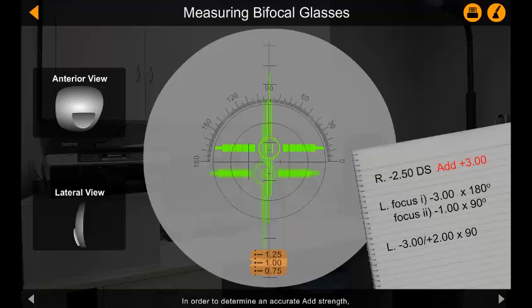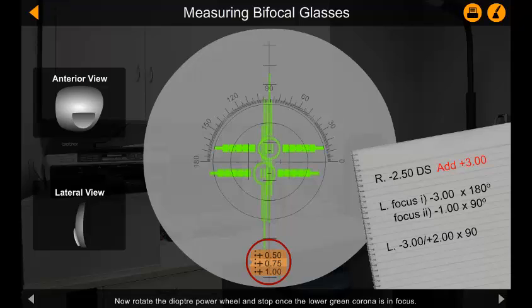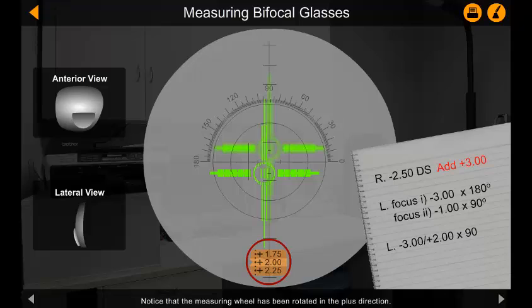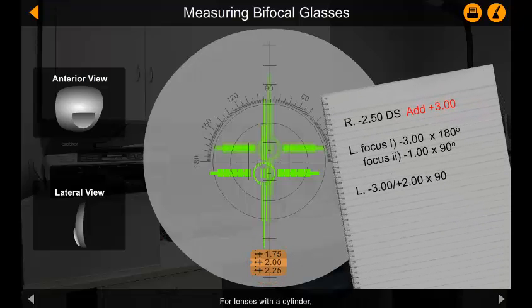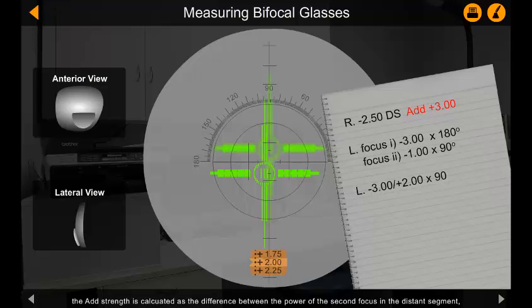In order to determine an accurate add strength, we will begin by taking the reading from the second focus. Note the value on the diopter scale. Now rotate the diopter power wheel and stop once the lower green corona is in focus. Notice that the measuring wheel has been rotated in the plus direction. For lenses with a cylinder, the add strength is calculated as the difference between the power of the second focus in the distance segment from where we started the measurement and the current diopter scale value. The add is therefore plus 3 diopters.